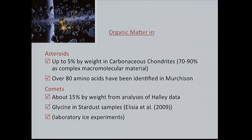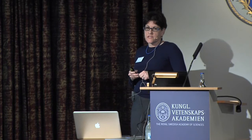If we go back to about four and a half billion years ago, our solar system was condensing rapidly — a pretty chaotic time with a lot of collisions. There was a lot of organic matter concentrated in asteroids, which contained up to five weight percent in the most carbon-rich ones, the carbonaceous chondrites, and also in comets, where you have up to 15 weight percent based on analyses of comet Halley.